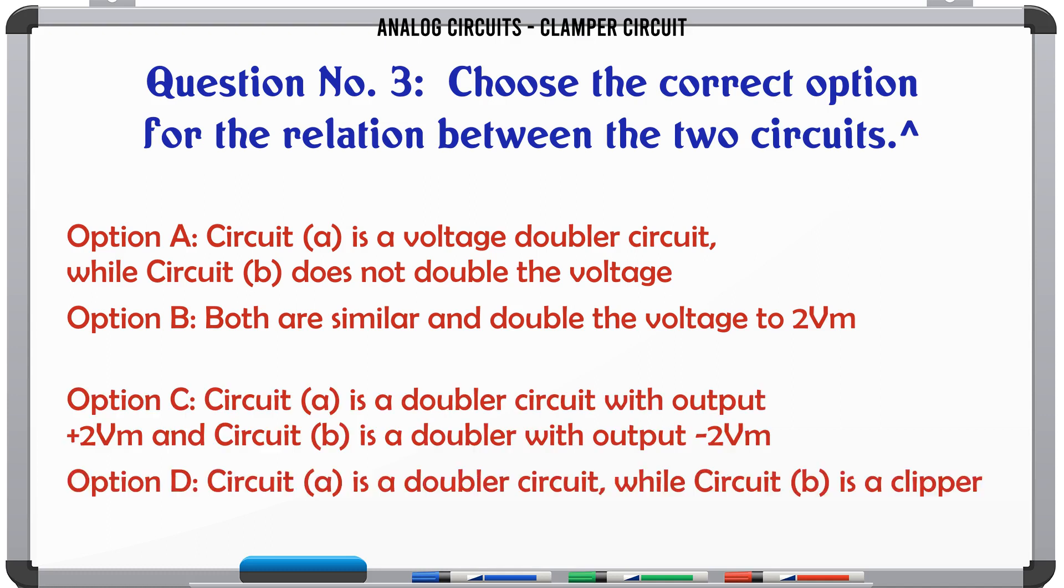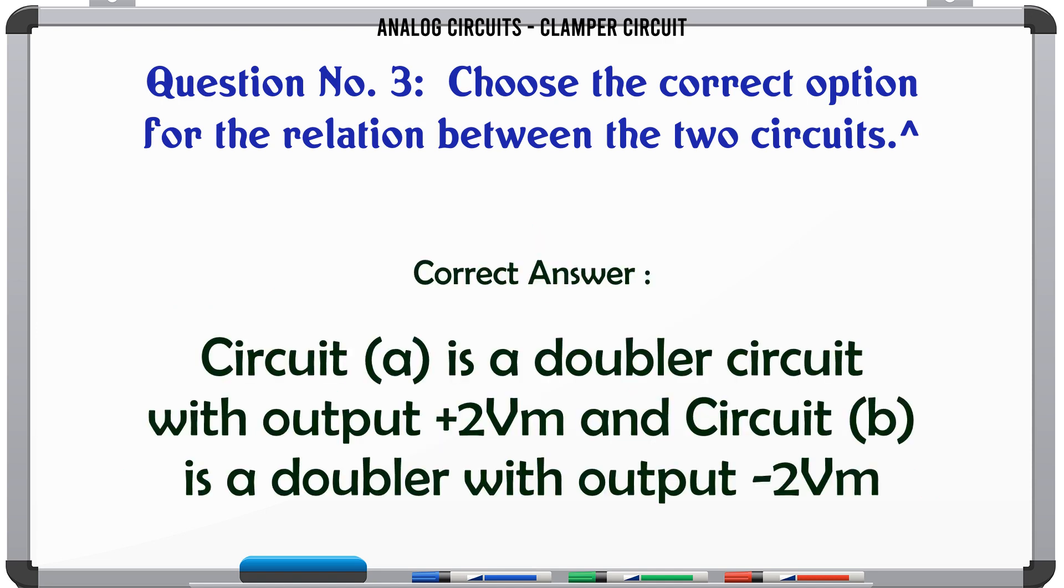Choose the correct option for the relation between the two circuits. A: Circuit A is a voltage doubler circuit while circuit B does not double the voltage. B: Both are similar and double the voltage to 2Vm. C: Circuit A is a doubler circuit with output +2Vm and circuit B is a doubler with output -2Vm. D: Circuit A is a doubler circuit while circuit B is a clipper. The correct answer is C.